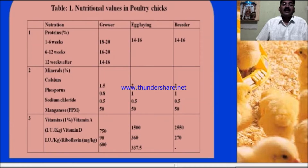According to the nutritional values for poultry chicks, the key nutrients are proteins, minerals, and vitamins. These requirements vary for grower chicks, egg-laying chicks, and breeders. The protein level required for growers is 18 to 20 percent, while for egg-laying chicks it is 14 to 16 percent.